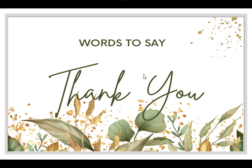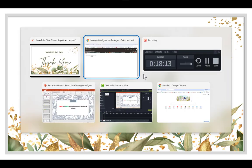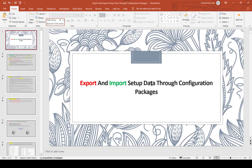This has been an overview of how to export and import setup data between environments in Oracle Fusion. You export system configuration data from one environment and import it to another. Unlike older approaches where you had to start from scratch in production, these tools allow you to simply copy the configuration from one instance to another. Thanks for watching.